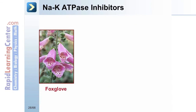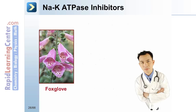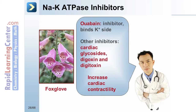There are several compounds that inhibit the sodium-potassium ATPase. Ouabain is an inhibitor; it binds to the potassium side of the protein. Other inhibitors include cardiac glycosides, digoxin, and digitoxin from foxglove. These compounds result in increased cardiac contractility.